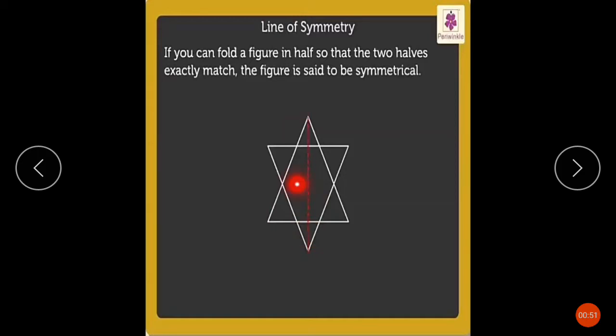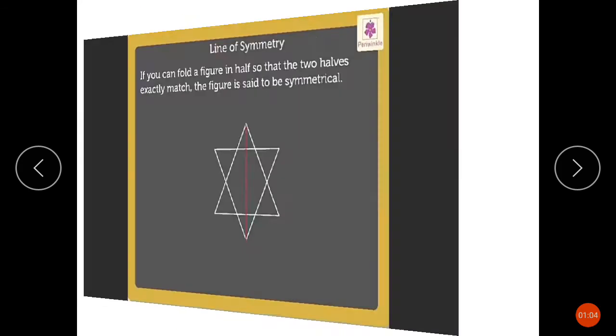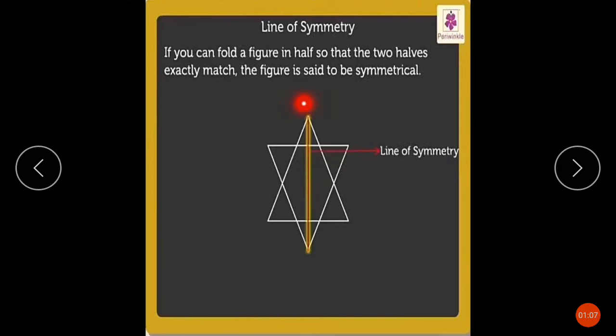ٹھیک ہے، جس میں آپ مکمل طور پر اس کا half کر دیتے ہو، اگر آپ اسے fold کریں تو exact ایک دوسرے سے match کر جائے، تو ہم اسے کیا بولتے ہیں? ہم اسے symmetrical بولتے ہیں. If you can fold a figure in half so that two halves exactly match, the figure is said to be symmetrical.